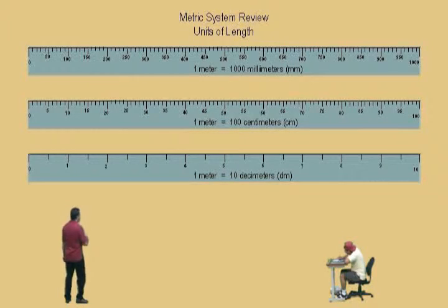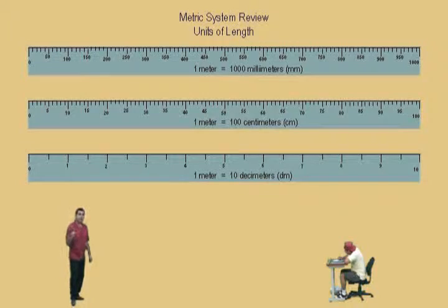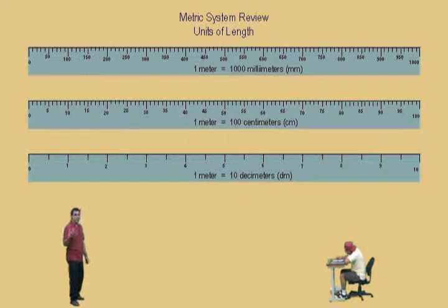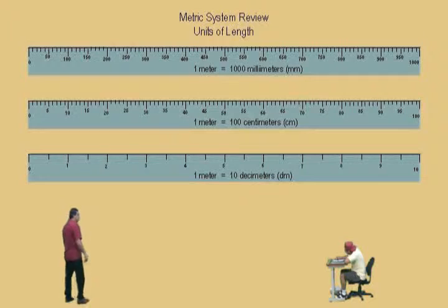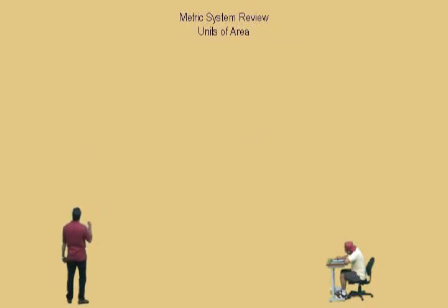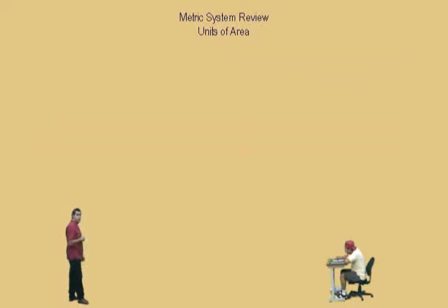And a meter stick broken up into decimeters. Remember, deci means a tenth of, and so there are ten decimeters in one meter. Okay, so let's do an area problem — we're going to calculate some area in the metric system.